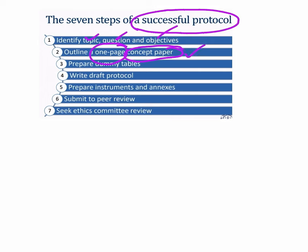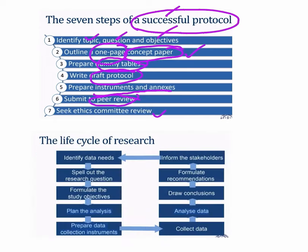These steps are sequentially and chronologically very important. Preparing the dummy tables, then writing a draft protocol, and we need to prepare the instruments or the study tools and the annexures. Then we need to submit it to our peers for review and to our ethics committee for further review. These are the seven steps of a successful protocol.